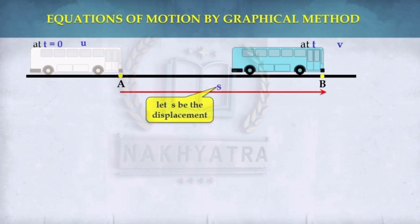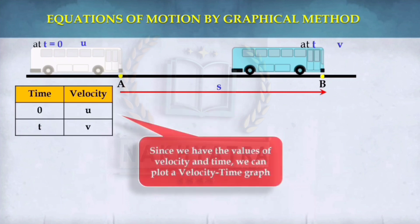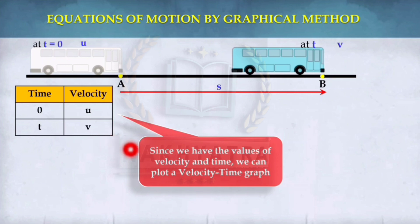The distance between A and B is called the displacement, denoted as S. At time 0 the velocity is U, and when time is T the velocity is V. Since we have the values of velocity and time, we can plot a velocity-time graph.